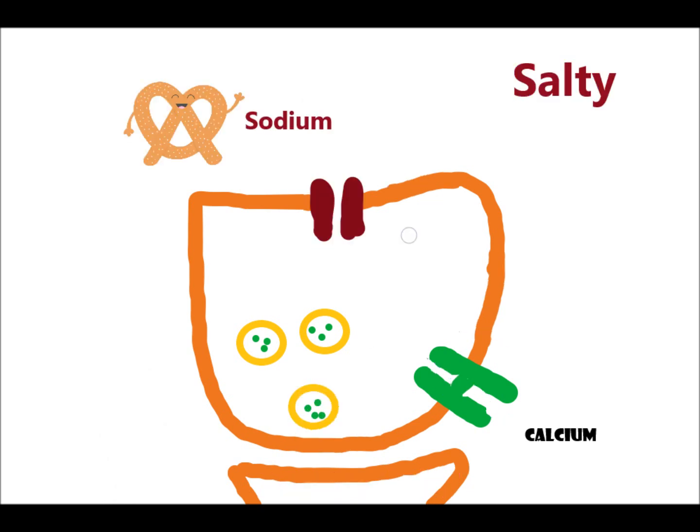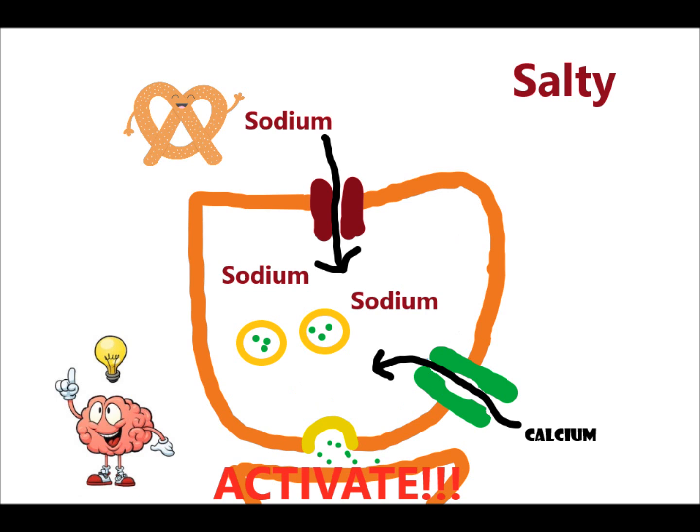Our next receptor is a salt receptor. This receptor is unique because it has an open channel that allows sodium to flow in. Salty food has lots of sodium. So, when you eat something salty, more sodium can enter the receptor. The increased sodium leads to the opening of a calcium channel, an influx of calcium. As we saw before, this influx of calcium causes the sacs neurotransmitter to fuse to the bottom of the receptor, causing it to release the neurotransmitter and transmit a signal to the brain that you're eating something salty.